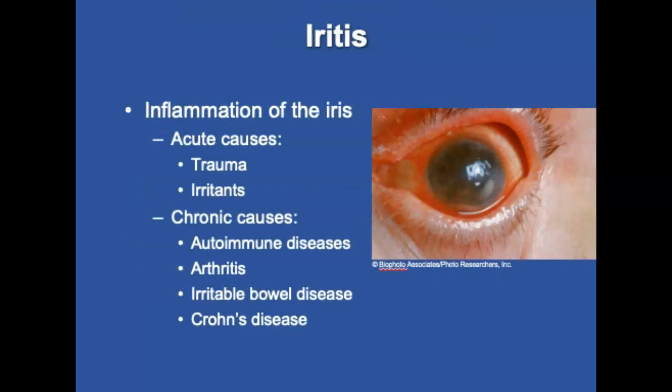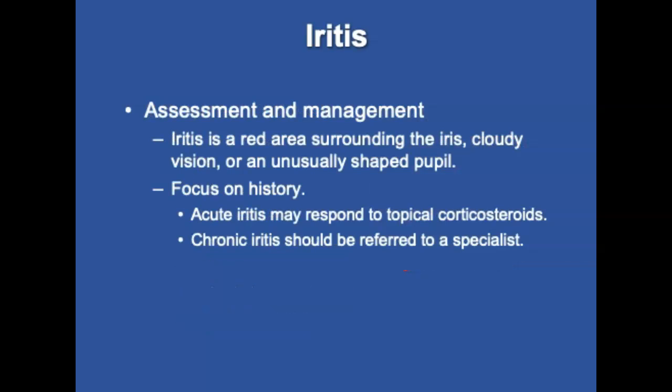Iritis is inflammation of the iris and the third leading preventable cause of blindness. It can be acute or chronic. Acute iritis is caused by trauma or irritants and usually affects only one eye. Chronic causes include autoimmune diseases, irritable bowel disease, or Crohn's disease; infectious causes include Lyme disease or tuberculosis. Iritis presents as redness surrounding the iris, cloudy vision, and an unusually shaped pupil. Acute iritis responds well to topical corticosteroids as long as the cause is not fungal, viral, or bacterial. With 90 different pathogens or autoimmune processes as potential causes, patients should be referred to a specialist.